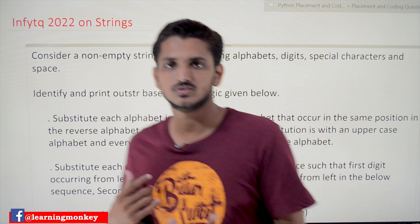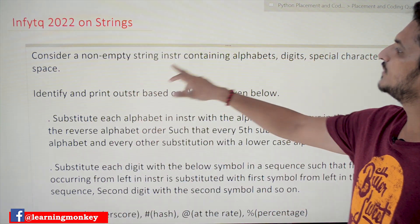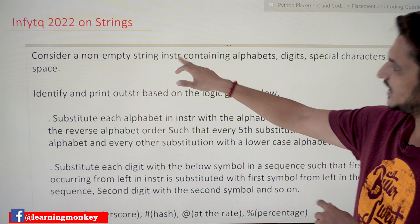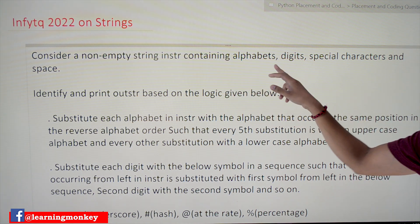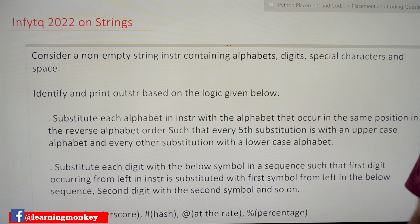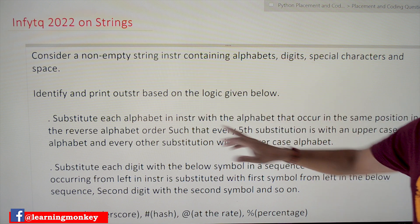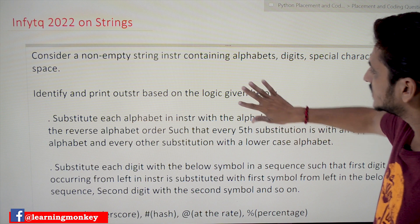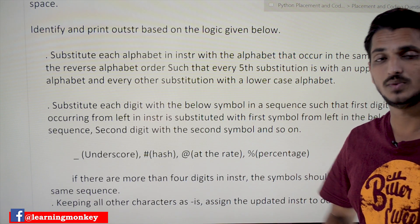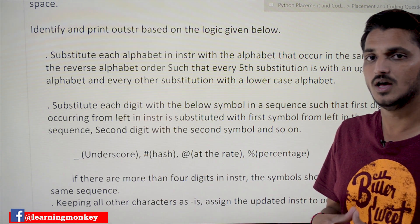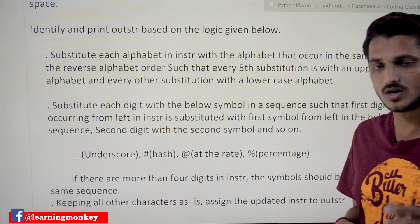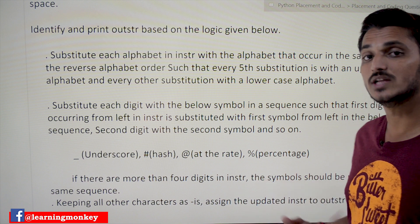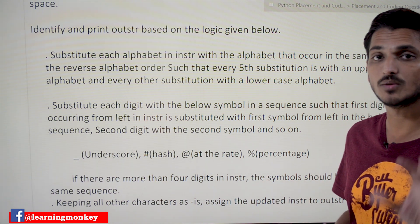Let's read the question. Consider a non-empty string 'instr' containing alphabets, digits, special characters, and spaces. Identify and print output string 'outstr' based on the logic given below. Please visit our website learningmonkey.in for placement training — we have a separate course called placement training for service-based companies. Take the complete course for easily solving placement questions; you can solve any campus placement questions.